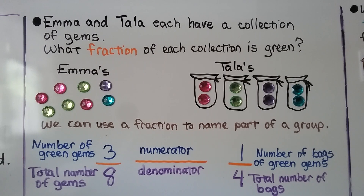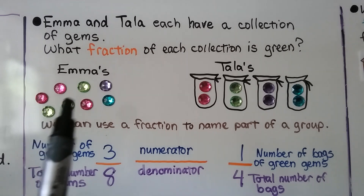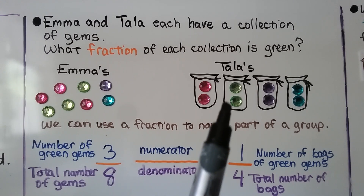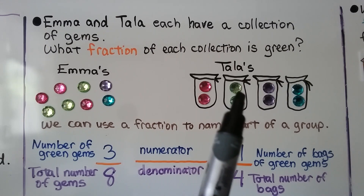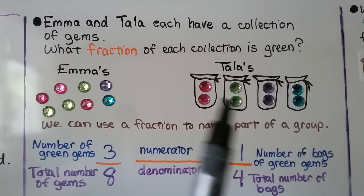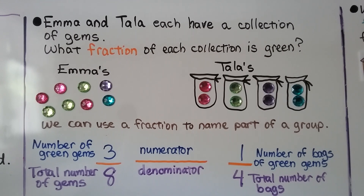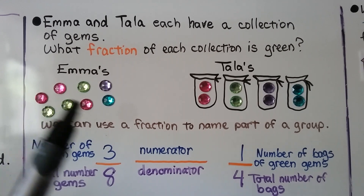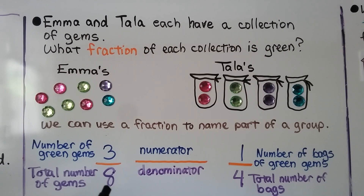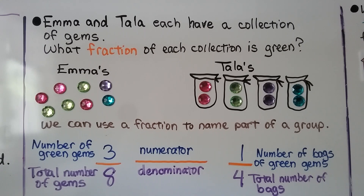Emma and Tala each have a collection of gems. What fraction of each collection is green? Emma's gems have three green ones. Tala has two green ones in bags — two in four bags each. We can use a fraction to name part of a group. There are eight gems in all — that's the total number of gems, our denominator. The number of green gems is three — that's our numerator.